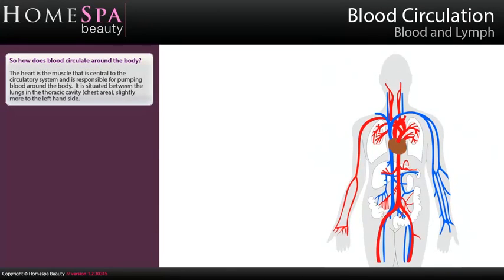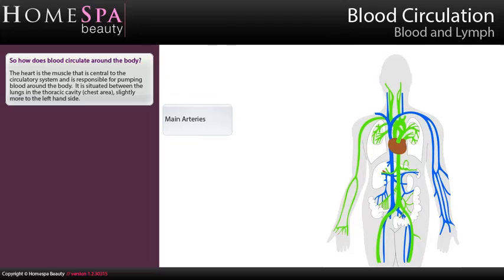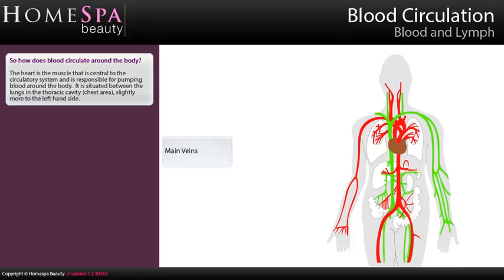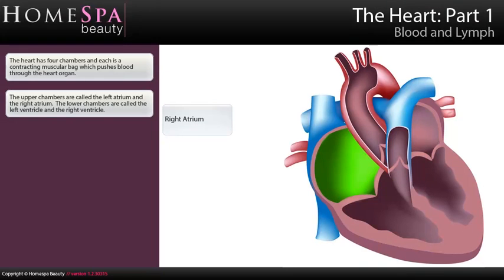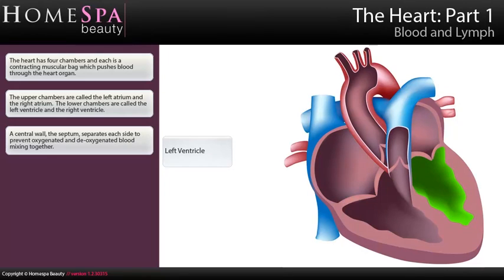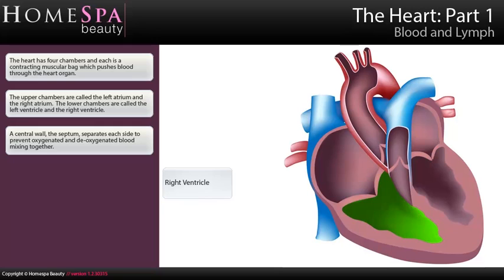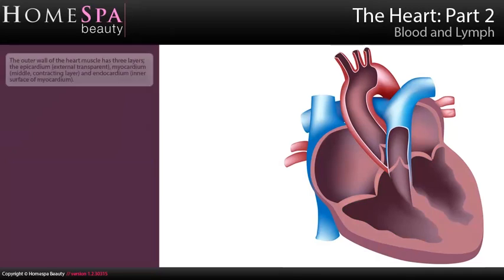Blood circulation. The heart is the muscle central to the circulatory system and is responsible for pumping blood around the body. It is situated between the lungs in the thoracic cavity, chest area, slightly more to the left-hand side. The heart has four chambers, each a contracting muscular bag which pushes blood through. The upper chambers are called the left atrium and the right atrium; the lower chambers are called the left ventricle and the right ventricle. A central wall, the septum, separates each side to prevent oxygenated and deoxygenated blood mixing together.